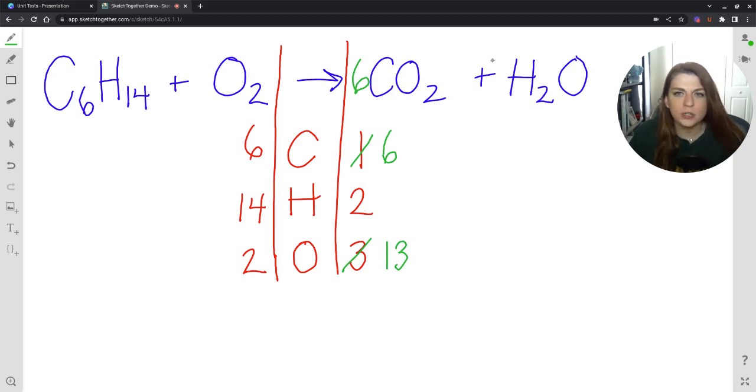I already have 2 here. If I put a 7 right there, 7 times 2 would give me the 14. And now, instead of having 13, I have 12 plus 7. That's 19 oxygens, which also is a terrible number for balancing chemical equations.